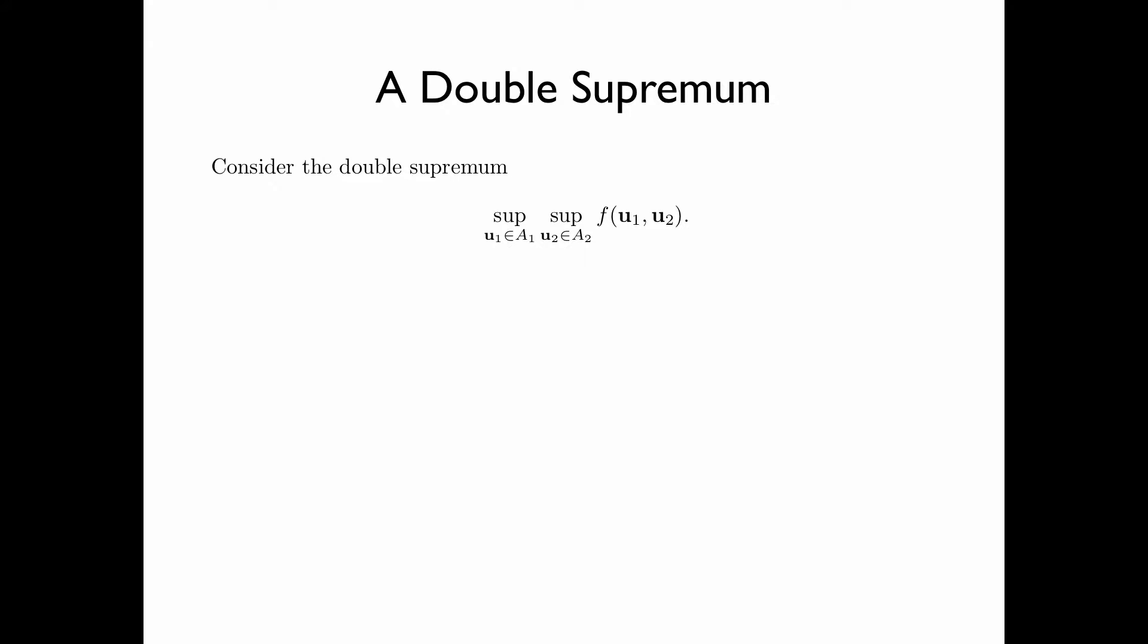Consider a function f of u_1 and u_2, where u_1 and u_2 are multidimensional real vectors. And take the supremum of f, over all u_1 in some set A_1, and u_2 in some set A_2. Where A_i is a convex subset of the n_i-dimensional Euclidean space for i equals 1 and 2.